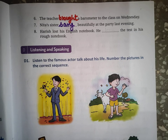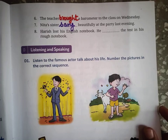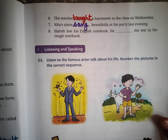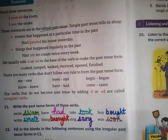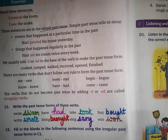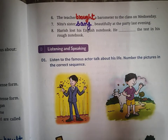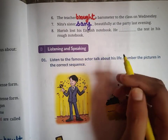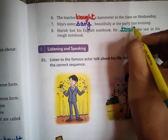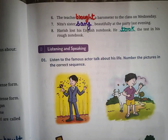Next sentence: 'Neetha's sister ___ beautifully at the party last evening.' Last evening Neetha की sister ने party में क्या किया? Swimming नहीं, had नहीं, take नहीं, buy नहीं, write नहीं, bring हो सकती है, 'sing' हो सकता है — हाँ, उसने सुंदर गाना गाया होगा। तो past tense — 'sang', S-A-N-G. 'Neetha's sister sang beautifully at the party last evening.' फिर last sentence: Harish ने English notebook गुम कर दी, इसलिए उसने test rough notebook में दिया। Exam/test के लिए 'take' use होता है — take की past है 'took'. तो: 'He took the test in his rough notebook.'